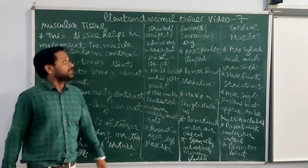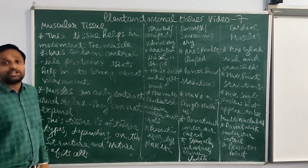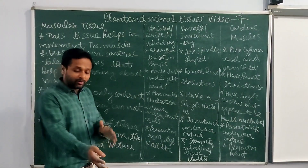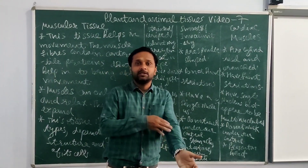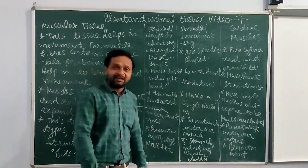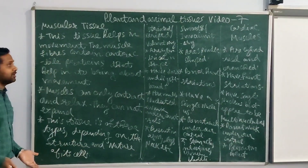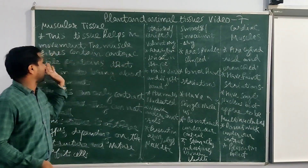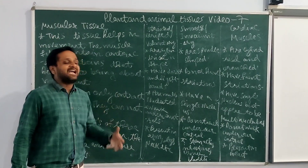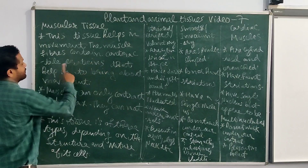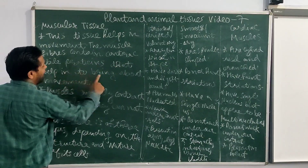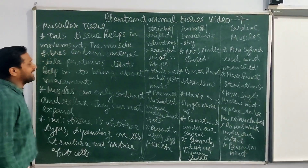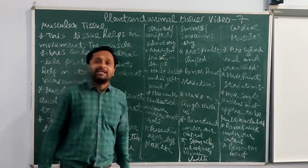Our next topic is muscular tissue. This tissue helps in movement. By using muscles we are able to move — for example, in the legs we have muscles, that is why we are able to move. The muscle fiber contains a contractile protein, and it is this contractile protein that helps to bring about movement.